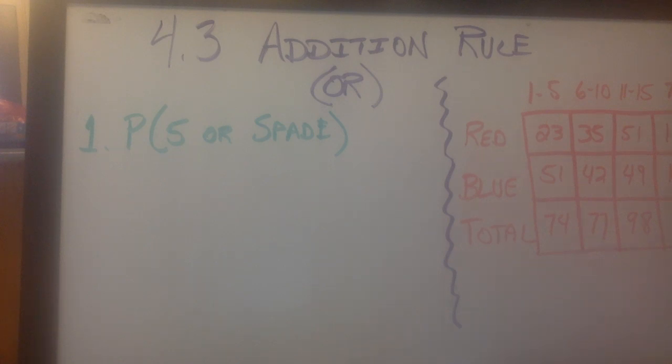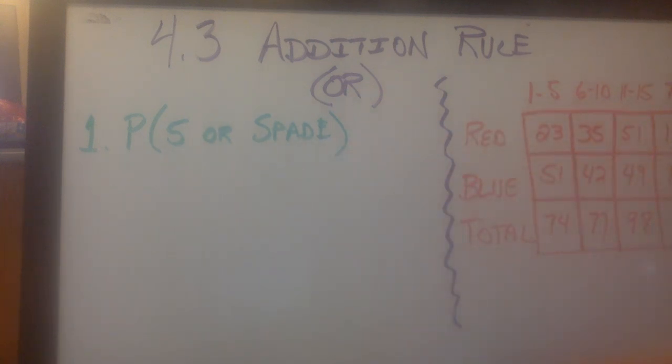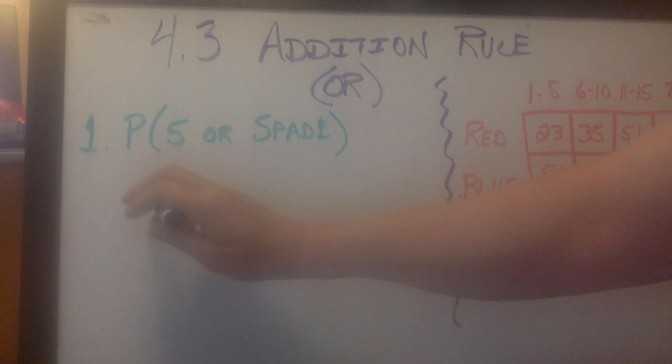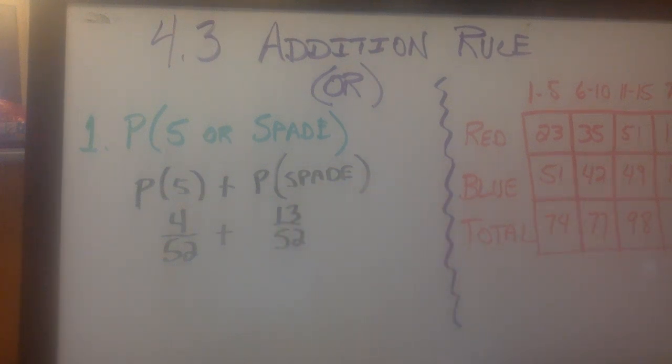So the first question is, what is the probability of getting a 5 or a spade? So we call it the addition rule. We would think of saying, let's write it as the probability of 5 plus the probability of getting a spade. The probability of getting a 5 is 4 out of 52, and the probability of getting a spade is 13 out of 52.